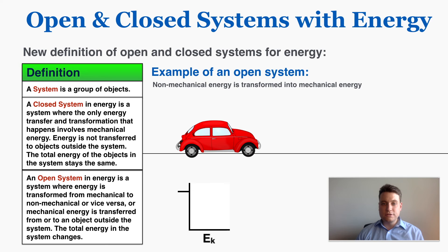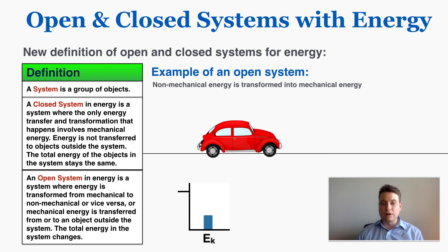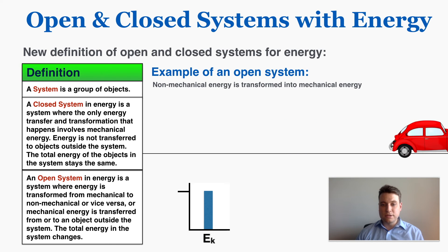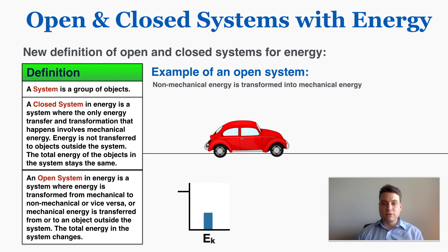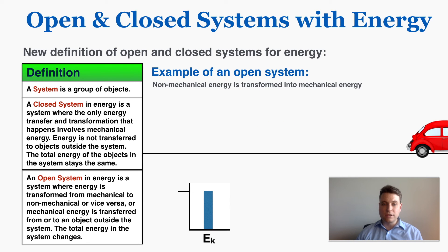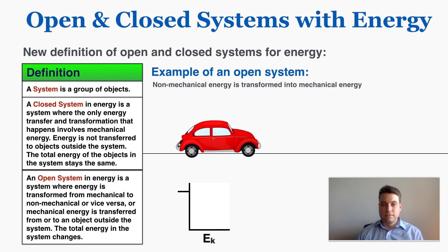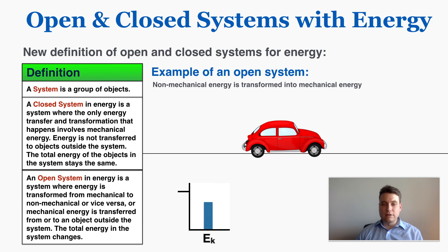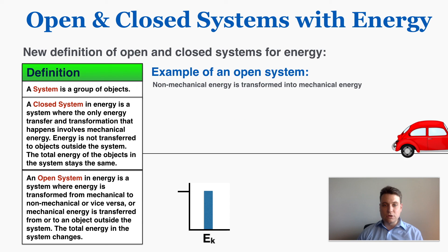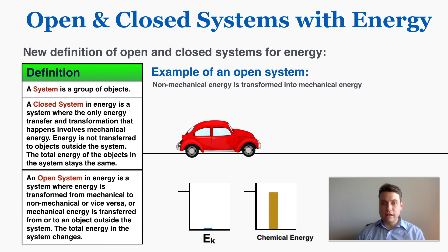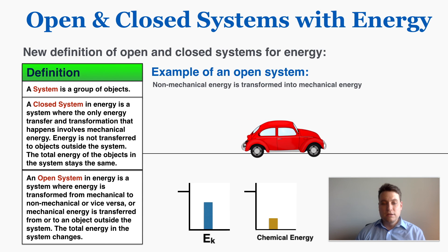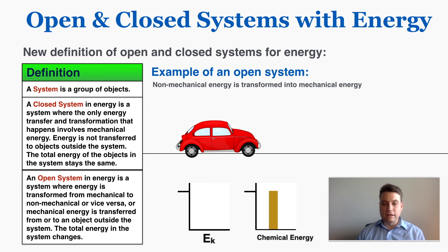Another example of an open energy system is when you hit the gas on your car. Non-mechanical energy is transformed into mechanical energy — the car starts with no kinetic energy, but as you accelerate it gains more and more kinetic energy. That energy has to come from somewhere, since it can't be created or destroyed. Specifically, it comes from the chemical energy in the gasoline, so you gain as much kinetic energy as you lose in chemical energy. That's the basic idea of open and closed systems with energy.